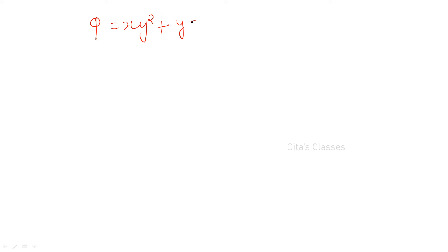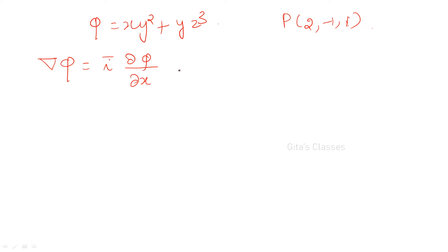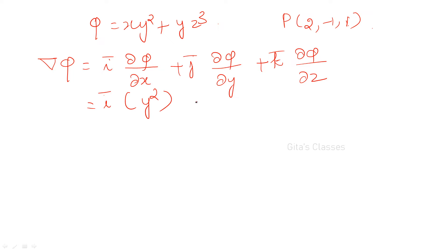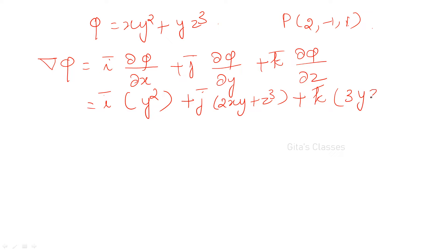Now for phi equal to xy² plus yz³ at the point P = (2, -1, 1), let us find del phi. Del phi is i into ∂phi/∂x plus j into ∂phi/∂y plus k into ∂phi/∂z. That is i into y² plus j into (2xy plus z³) plus k into 3yz². Whenever you differentiate partially with respect to one variable, treat all other variables as constant.